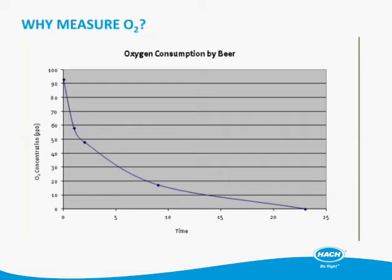The question about why measuring O2 comes down to: O2 reacts with beer. And O2 can react with beer really quickly or really slowly, depending upon the storage conditions, the temperature, the type of beer, and whether there's yeast around.